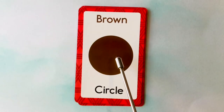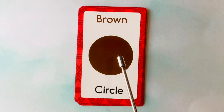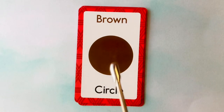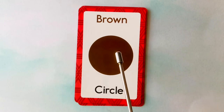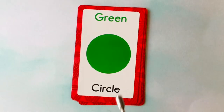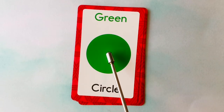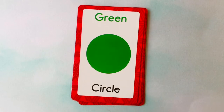This is a circle. What color is this circle? It's a brown circle. This is also a circle. What color is this circle? It's a green circle.